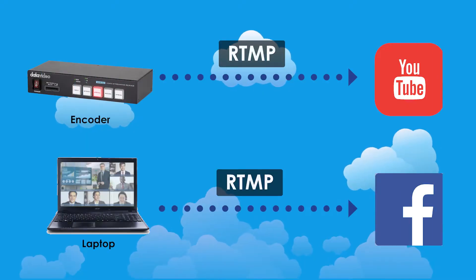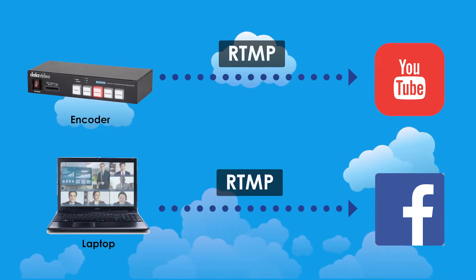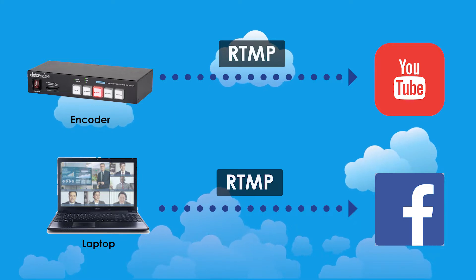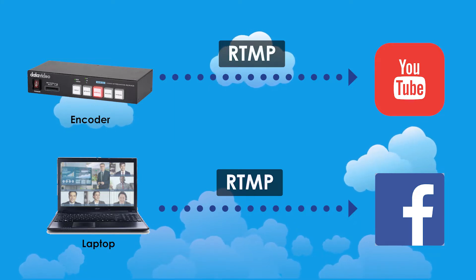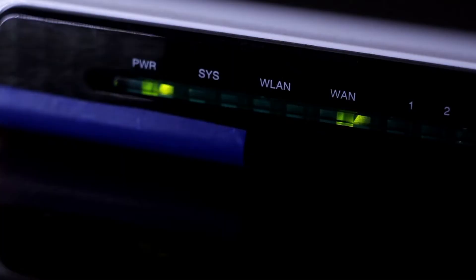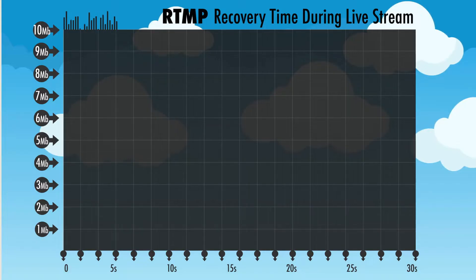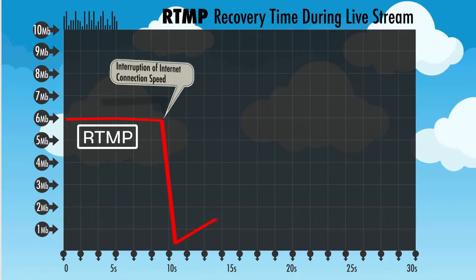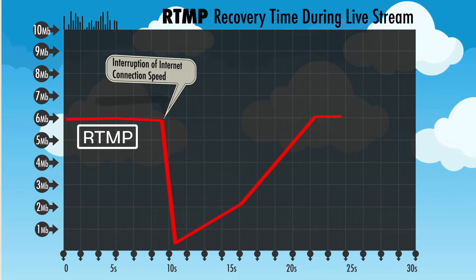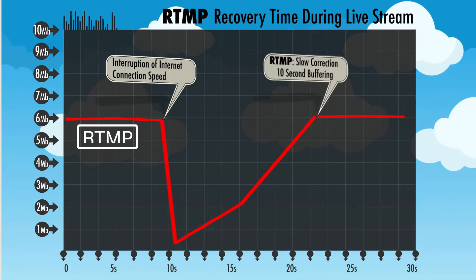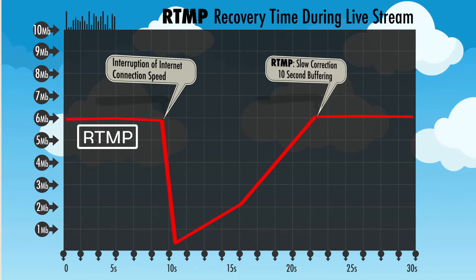Almost all live streams use RTMP protocol as their way to transport video. RTMP works great on reliable networks, but if there is an interruption on the video stream, RTMP does not transfer the data efficiently enough to recover lost data, which causes buffering or pixelated video.